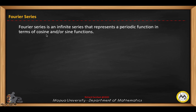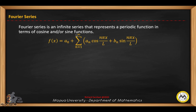Fourier series is an infinite series that represents a periodic function in terms of cosine and/or sine functions. The function f of x is equal to a sub o plus the sum of this function in terms of cosine and sine functions from n equals 1 to positive infinity.